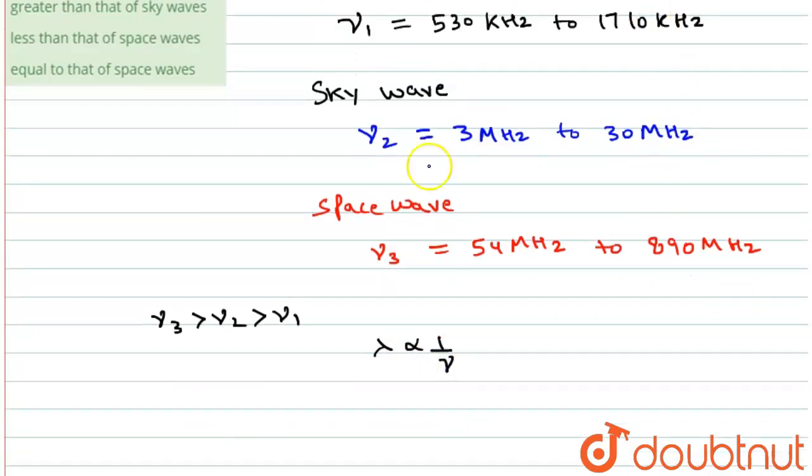So it is clear that we can write lambda 3 is less than lambda 2 is less than lambda 1. So this is the ground wave which is greater than sky wave.